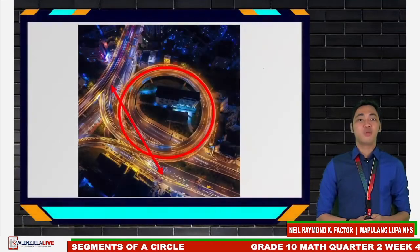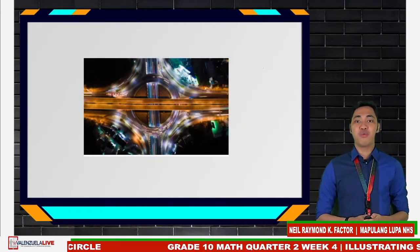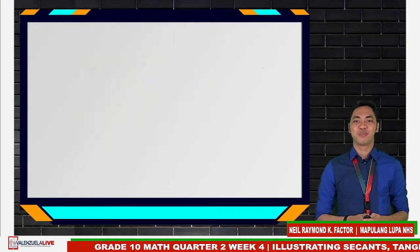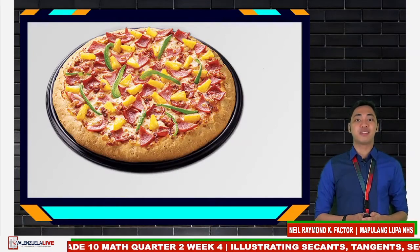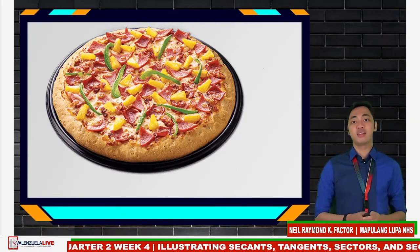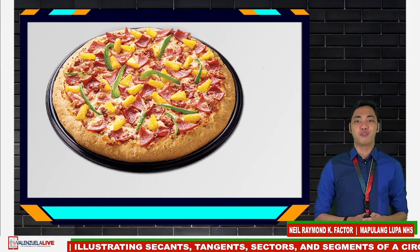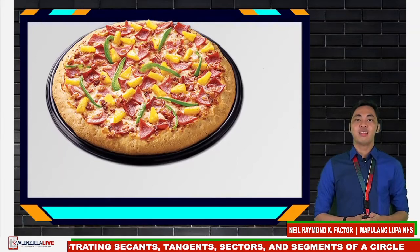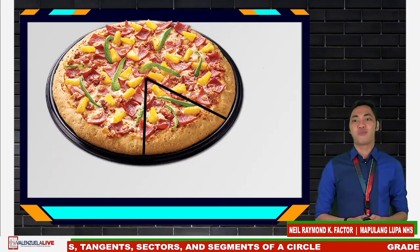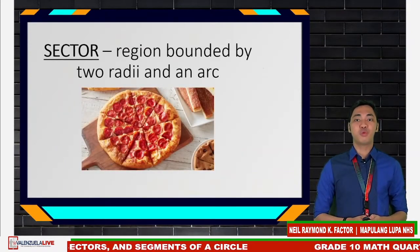Let us take a look at this busy highway — we can actually see a secant here. Another picture is this highway in Thailand. Now, let us take a look at this unsliced pizza. There are actually two ways in which you can cut the pizza: the usual cut and the barcada cut. These two cuts can illustrate the next two parts of the circle that we will be talking about.